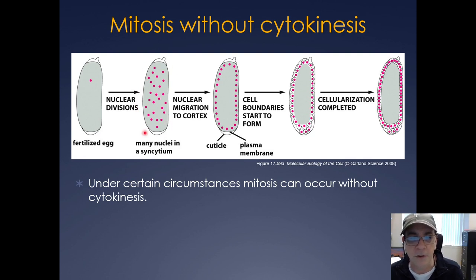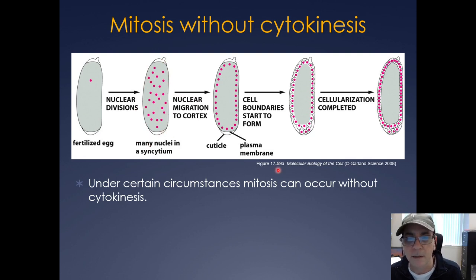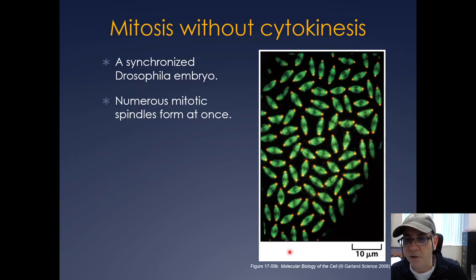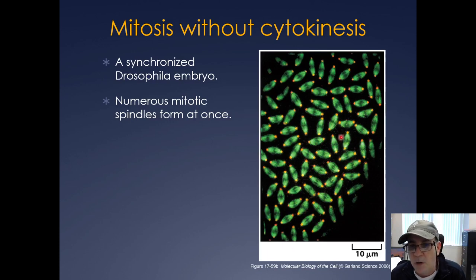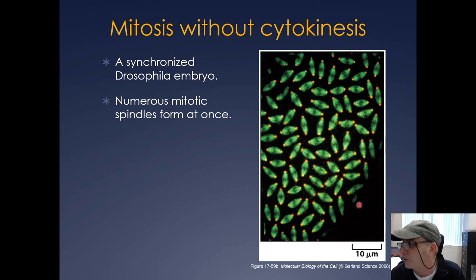In the Drosophila syncytium, many nuclei share a single cytosol. The nuclei just keep dividing and eventually cells form around them to complete the embryo, which then undergoes further cell division. A synchronized Drosophila embryo shows all the mitotic spindles forming simultaneously with no cytokinesis — only the nuclei are dividing.